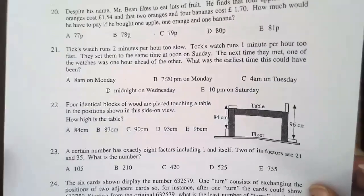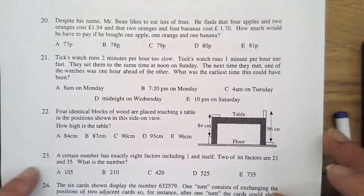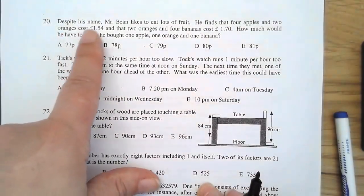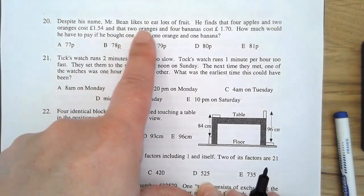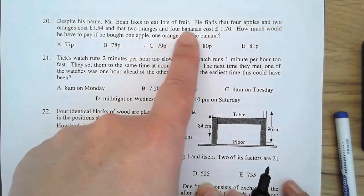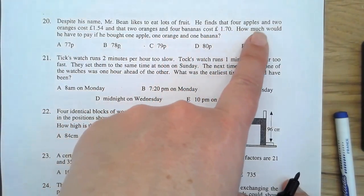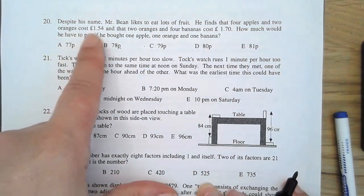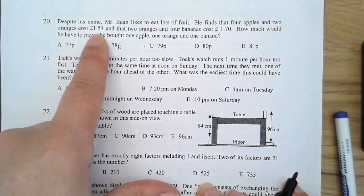Question 20. Despite his name, Mr Bean likes to eat lots of fruit. He finds that four apples and two oranges cost £1.54.